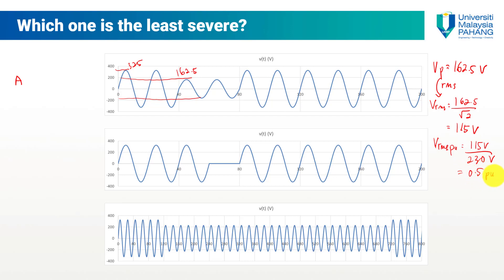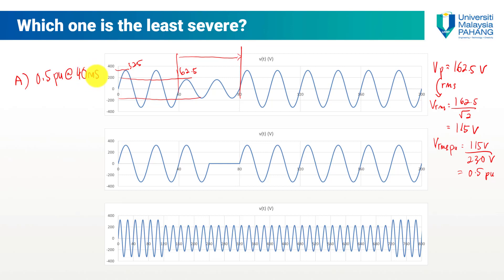For Event A, the RMS value is 115V. Converting to per unit by dividing by the base voltage of 230V, we get 0.5 pu. The duration of this waveform runs from 40 milliseconds to 80 milliseconds, so that's a duration of 40 milliseconds.